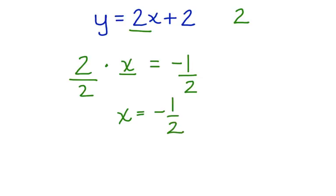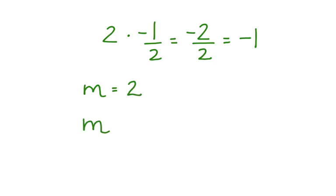Let's test it out. 2 times negative 1 half becomes negative 2 over 2, which simplifies to negative 1. So the slope of the first line was 2, and the slope of the line perpendicular to that line is negative 1 half.